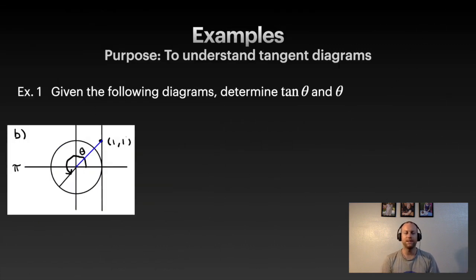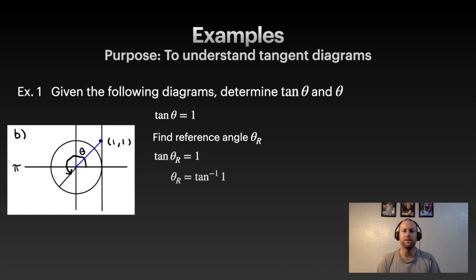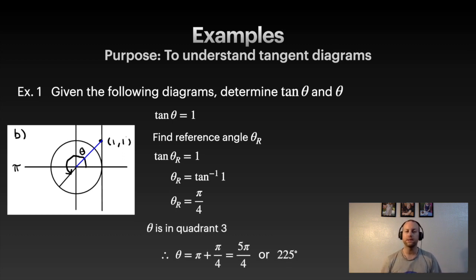Let's try this diagram — now we're in Quadrant 3. Extend the blue line up to the point (1, 1), so tan θ = 1. For the reference angle, arctan(1) = π/4. Since we're in Quadrant 3, we go π plus the reference angle: π + π/4 = 5π/4, or 225 degrees. That gives us our angle.